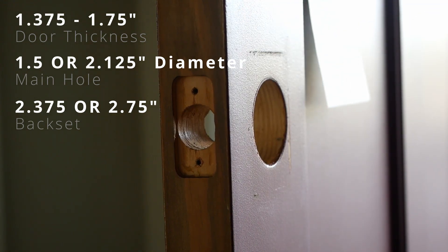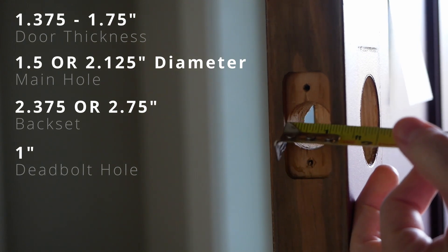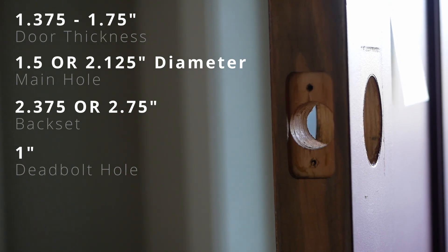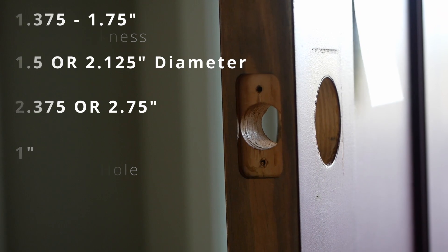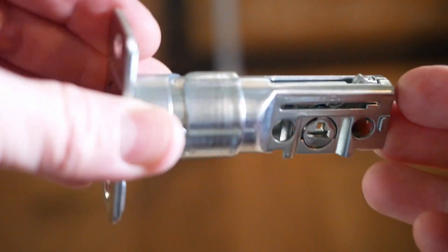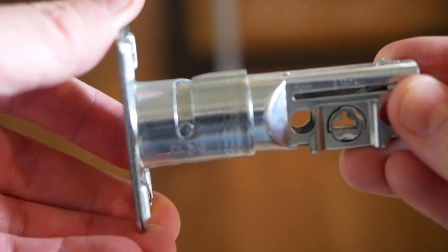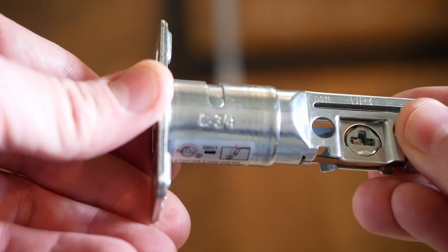And finally the deadbolt hole needs to be one inch, so here we are one inch. Again, these are standard sort of deadbolt dimensions but wouldn't hurt to double check before you install or even order. So the very first thing we're going to do here is we're going to take the deadbolt assembly and we're going to look for these markings right here.